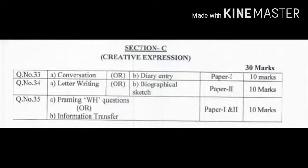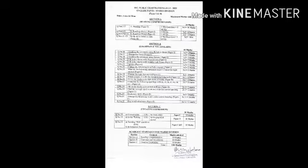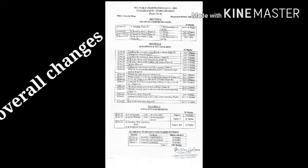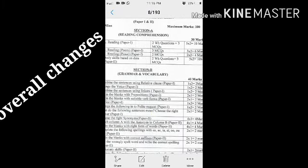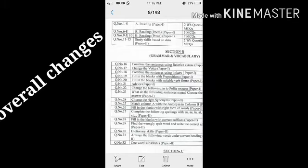Last question, question number 35, is framing WH questions on Paper 1, and information transfer on Paper 2. That is paragraph, bar chart, diagrammatic representation for 10 marks. Here the students have to remember that all the choices which are given in the B are removed. So this is somewhat a good area to get good marks.